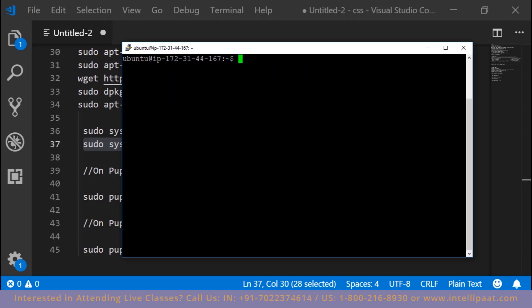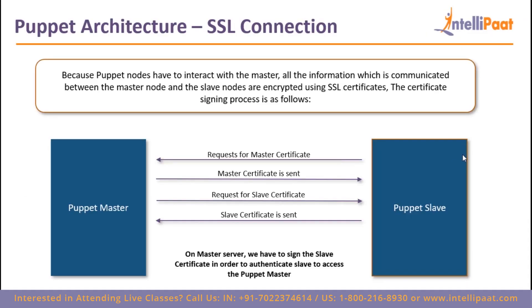Some steps happened in the background. The moment the Puppet slave starts, it sends a request for the master certificate. The Puppet slave knows where the master is because we specified the IP address in the hosts file. The master sends back its certificate and simultaneously requests the slave certificate, which the slave then sends to the master.